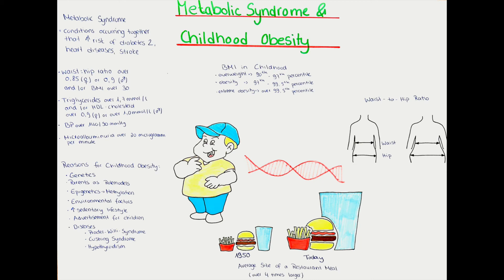A pediatrician usually measures the height, weight, and determines the BMI of the child. Blood pressure and blood glucose should also be checked. To eliminate diabetes mellitus, an oral glucose tolerance test can be done. In some cases, a consultation with an orthopedician or a psychiatrist can be helpful, as skeletal and psychiatric problems can arise from early childhood obesity.